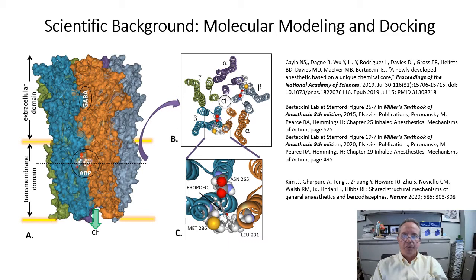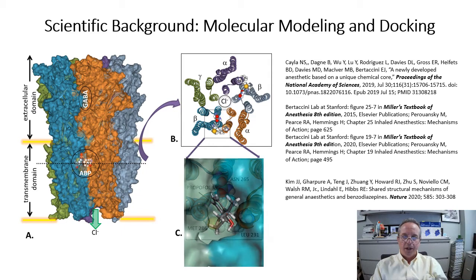There is an extracellular domain that binds GABA in between subunits, and there is a transmembrane domain composed of bundles of alpha-helical tetramers. The anesthetic binding site is located between these four-helix bundles in the outer third of the transmembrane domain, and is readily accessible by diffusion through the membrane itself.